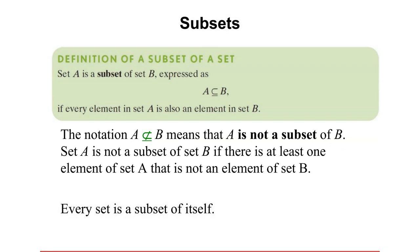A is not a subset of B if there is at least one element in A that is not an element of B. If you can find at least one member in A that does not belong to B, then A is said to be not a subset of B.